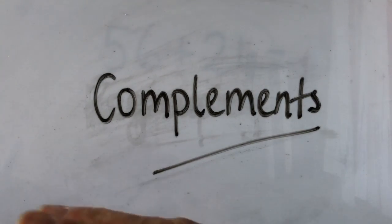And we use the term number bonds when we're dealing with numbers up to 10, number bonds to 10. But anything bigger than that, we use the word complements.